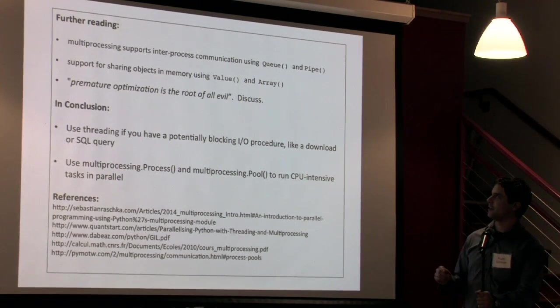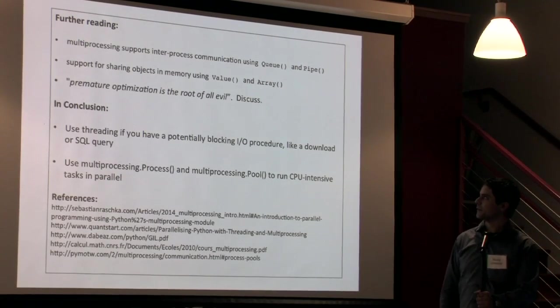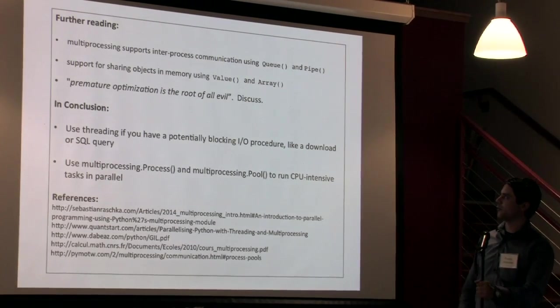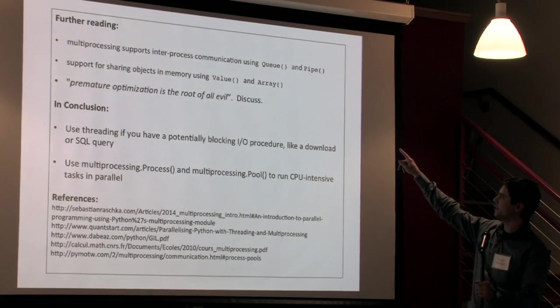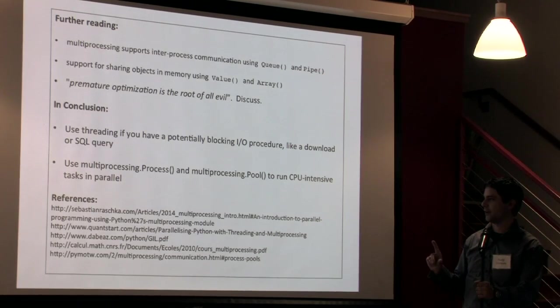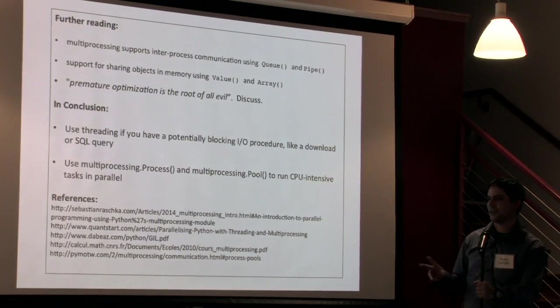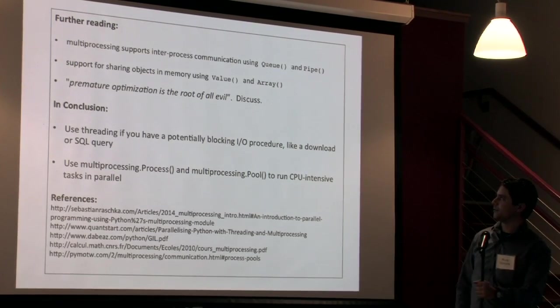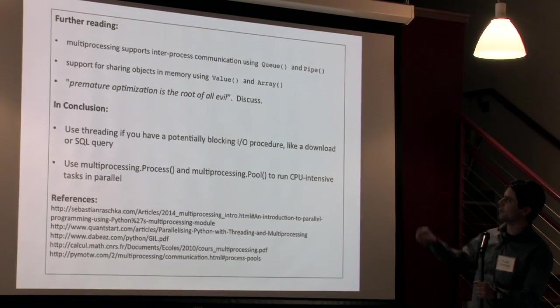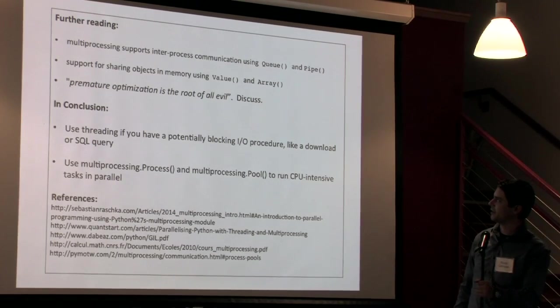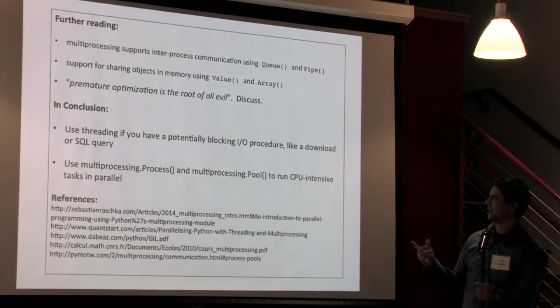So that's about all I wanted to tell you today. I've given you the tools you'll need to get started with multi-processing. So just a couple things here. Multi-processing does support interprocess communication using this Q function and there's also a pipe function which gives you a way to send both send and receive across different processes. So you can use that for sort of an MPI type approach for your passing messages. There's also support for sharing objects in memory and you can either do that with like an atomic value or also an array of values using those two types of objects.